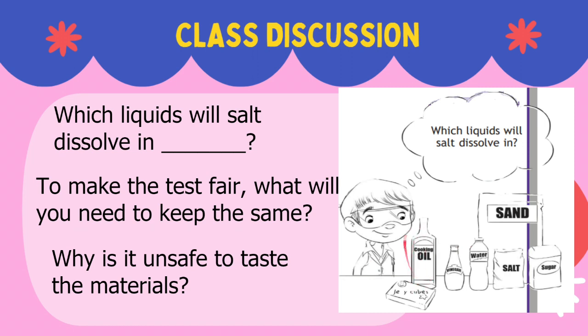Salt and oil are not chemically alike — one is charged, the other is not. As a result, when salt is added to oil, no bonds are broken. Salt and oil simply do not mix, and when combined, they remain distinctly separate.